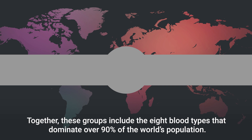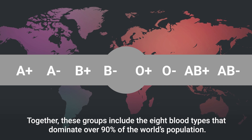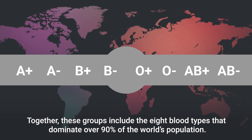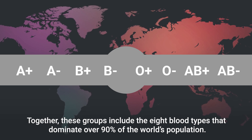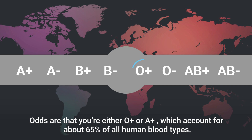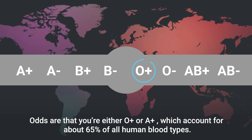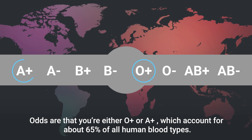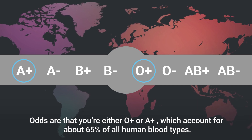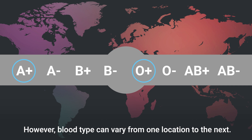Together, these groups include the eight blood types that dominate over 90% of the world's population. Odds are that you're either O positive or A positive, which account for about 65% of all human blood types.